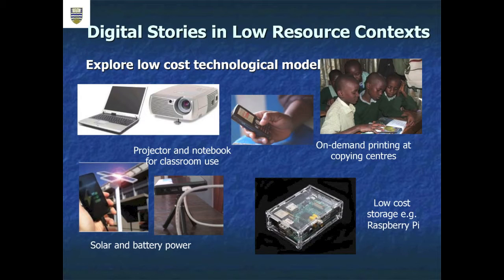When looking at digital stories in low-resource contexts, we have to be very creative. We've got to work with solar power, digital projectors, cell phones, low-cost storage, and on-demand printing at copying centers. Whichever way we can actually reach people, we do so. To run your cell phone, you need solar power.